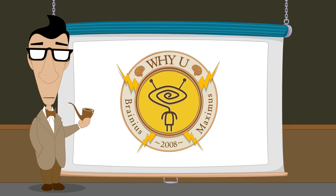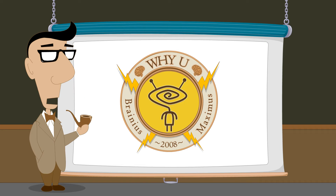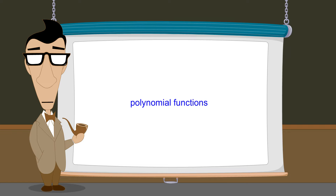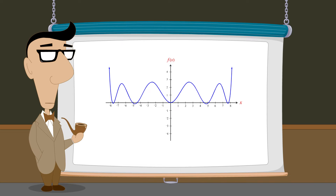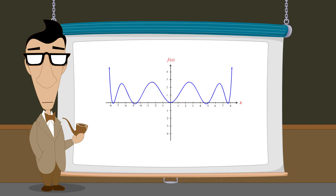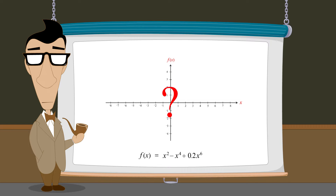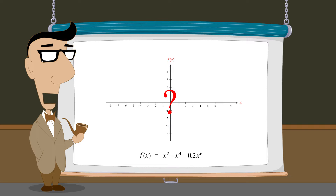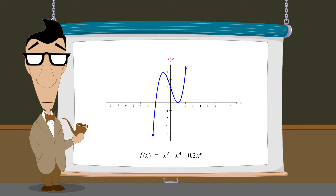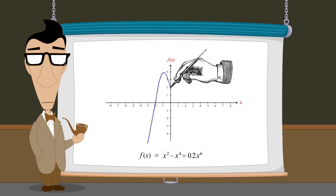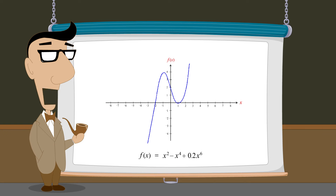Hello, I'm Professor Von Schmohawk and welcome to Why U. So far, we have discussed polynomial functions and showed that their graphs can have interesting and varied shapes. As in previous lectures, the polynomial functions we will be discussing are functions of a single real variable x. But given a particular polynomial function, how can we produce that function's graph? There are various graphing utilities capable of creating accurate graphs, however it is often desirable to sketch a quick representation to get a general idea of a function's behavior. In this lecture we will see how this can be accomplished.